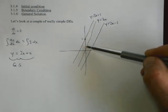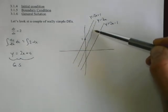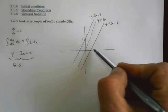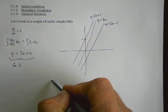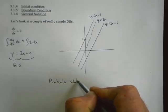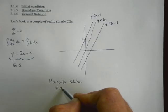So the general solution is just a family of parallel curves, in this case parallel lines. Any line which has a slope of 2 will be a solution to this differential equation. And if we want to talk about just one of these, we talk about a particular solution.